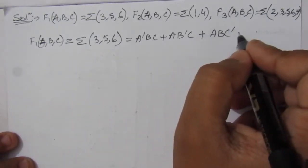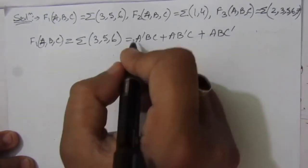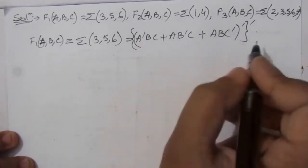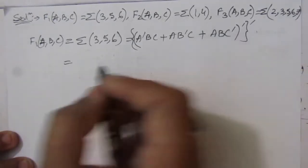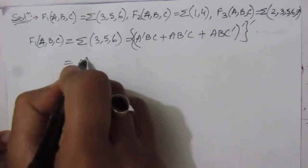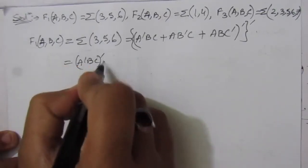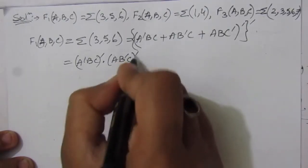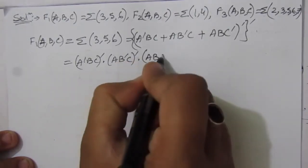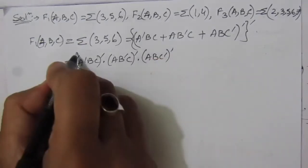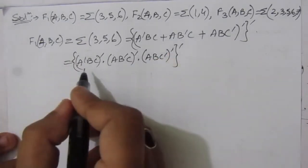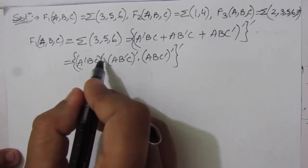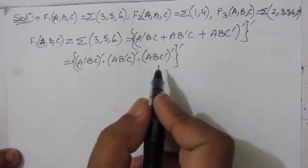To express F1 in NAND form, we apply double complementation — taking the complement twice leaves the expression unchanged. Breaking the inner complement gives: (A̅BC)' · (AB̅C)' · (ABC̅)' — all complemented — and then an outer complement. This means we invert each minterm output and feed them into a three-input NAND gate to get F1.